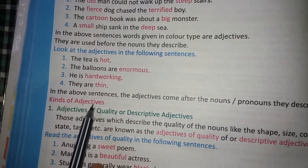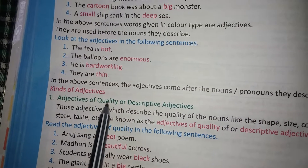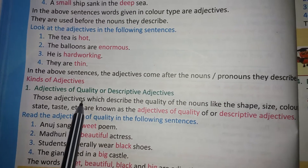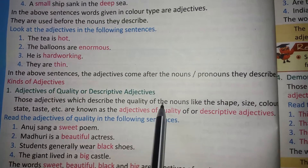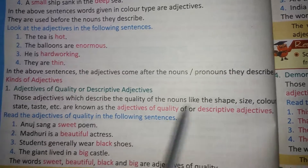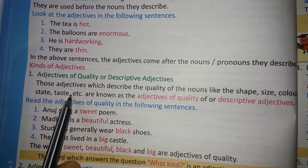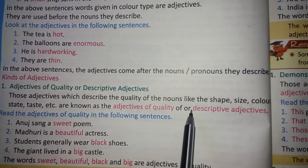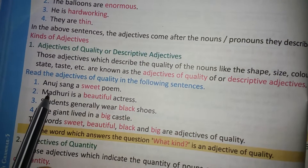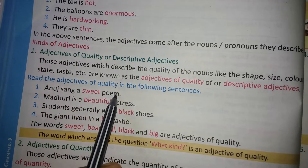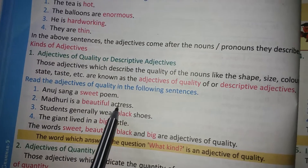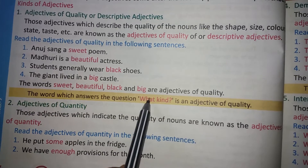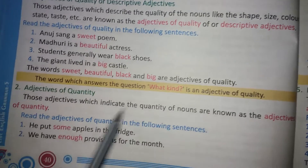Kinds of adjectives. First: adjectives of quality, or descriptive adjectives. Those adjectives which describe the quality of nouns — like the shape, size, color, state, or taste — are known as adjectives of quality or descriptive adjectives. Example: Anuj sang a sweet poem; Madhuri is a beautiful actress. The word which answers the question 'what kind' is an adjective of quality.